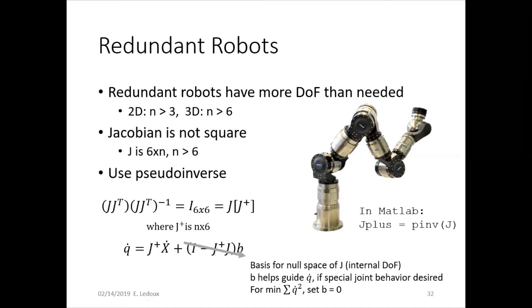That is called the basis for the null space of J, because if you multiply all of that, starting with the I minus J plus J times B, you multiply all of that times the original Jacobian, then it's going to equal zero.